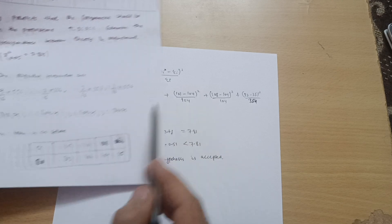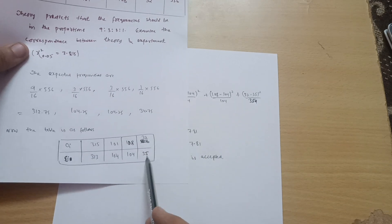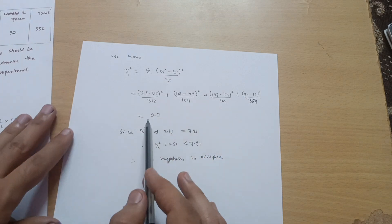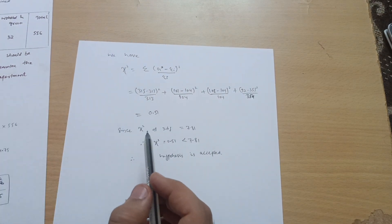Plus 108 minus 104 whole square divided by 104, plus 32 minus 35 whole square divided by 35. Once you calculate this you will get 0.51. This is the chi-square value.